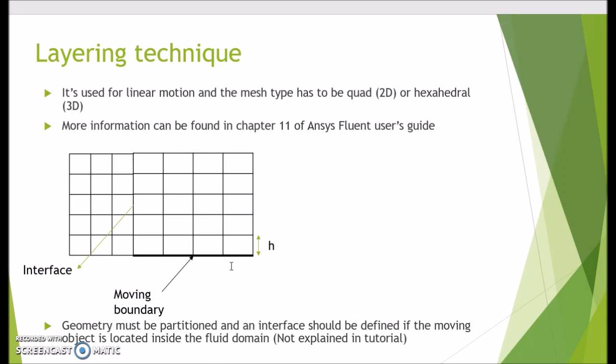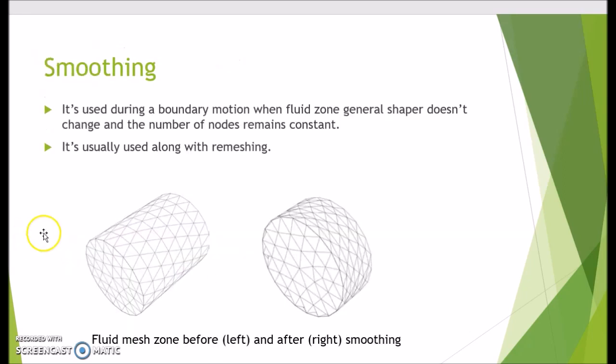Let's move to the next technique which is called smoothing. It's used during a boundary motion when fluid zone general shape doesn't change and the number of nodes remain constant. In this picture I explain what it means. Basically it means that the cylindrical shape does not change but the distance between nodes changes. It's like a spring where the physical element does not change but the distance changes.